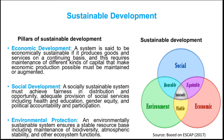Economic development is supported by the augmentation of capital. The second pillar is social development. A socially sustainable system must achieve fairness in the distribution of income and opportunity, adequate provision of social services including health and education, gender equity, and political accountability and participation. The third dimension is environmental protection. An environmentally sustainable system ensures a stable resource base, including maintenance of biodiversity, atmospheric stability, and other ecosystem functions.